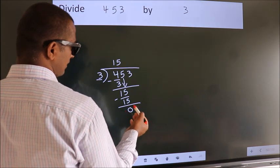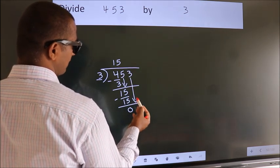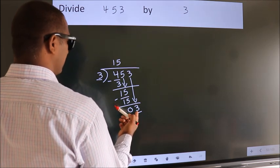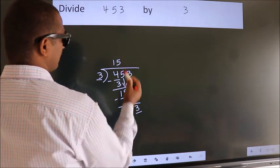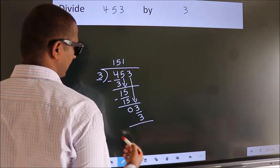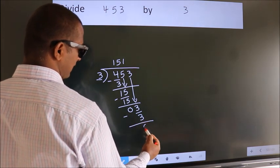After this, bring down the beside number. 3 down. So, 3. When do we get 3? In 3 table, 3 once, 3. Now, we subtract. We get 0.